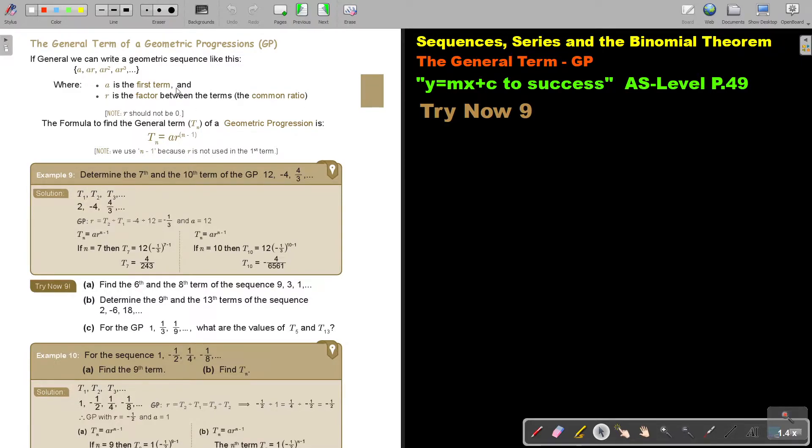Note, R should not be zero, otherwise these terms will disappear. Here, the formula to find the general term TN of a geometric progression is TN equals AR to the power N minus 1.